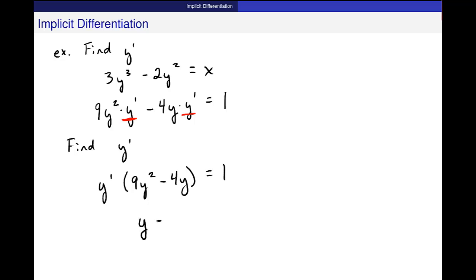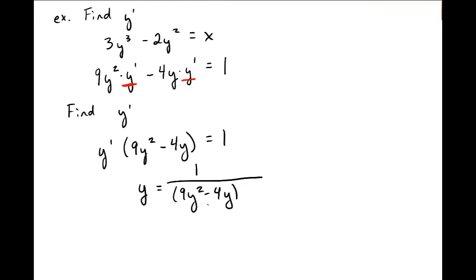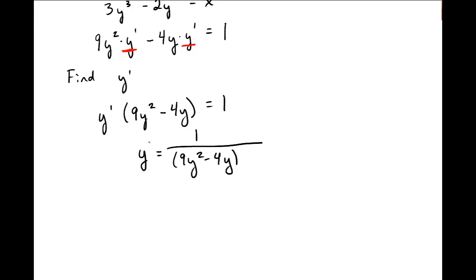To get it by itself, I divide both sides by this piece that's inside here. This is also defined implicitly. That's a y prime, implicitly in terms of y. And you can have x's there too. But the idea is to try and get y prime by itself.